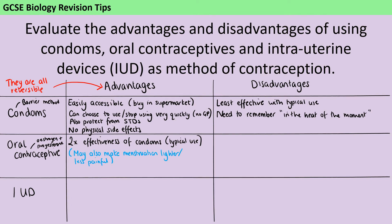You might also want to include that lots of people find when they take the pill, it makes their periods lighter or less painful. I've noted this separately because strictly speaking, this question asks about contraception, and that's not an advantage as a contraceptive — it's just a different advantage of taking it. However, there have been past AQA questions that have included information about people's periods, so it is worth putting in your answer, but I wouldn't include it as your only advantage of the pill.